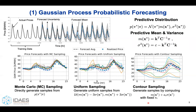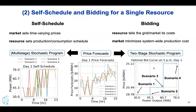For the probabilistic forecasting — which is step one — we've done some work with Gaussian process models. These are nice because they have a predictive distribution. We're also going to compare different ways of sampling these: Monte Carlo sampling, which is a statistically well-defined sample, and some other techniques that care less about statistical accuracy and more about getting spread in the scenarios.